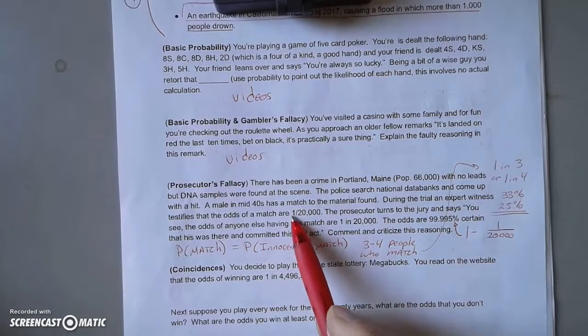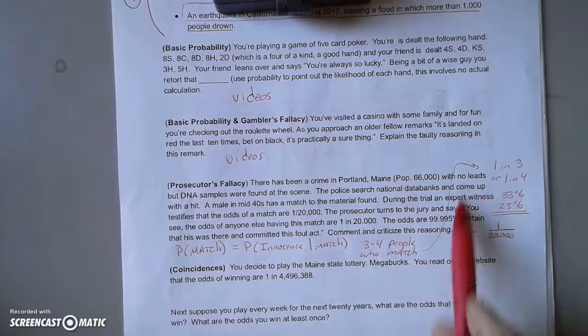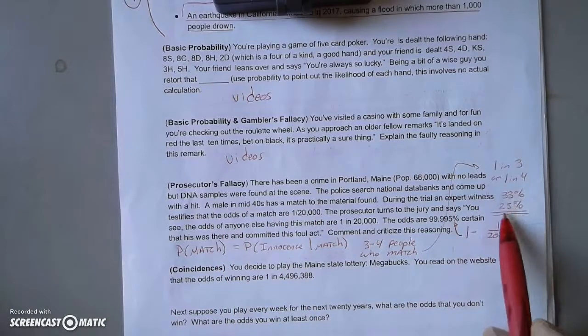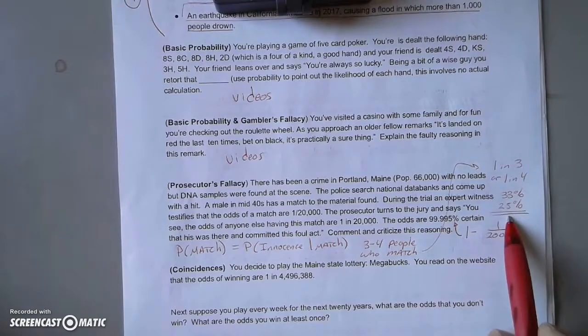It sounds like the probability of innocence is one in 20,000, but that's not the case. The probability of innocence in this rather simple example would be, you know, 75 percent or 67 percent, these being the probability of guilt.